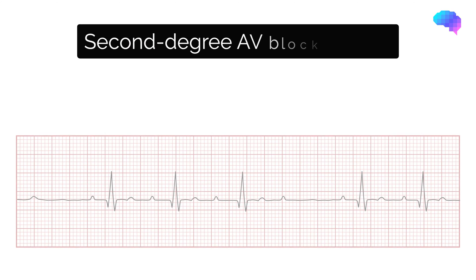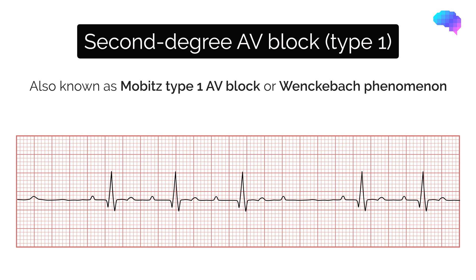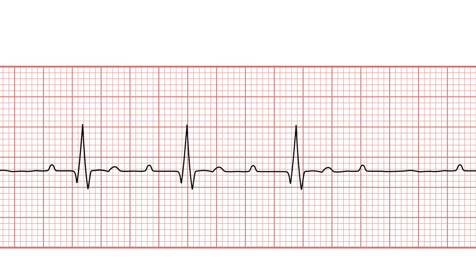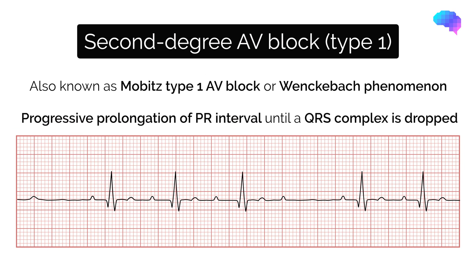Second degree AV block type 1 is also known as Mobitz type 1 AV block, or Wenckebach phenomenon. Typical ECG findings include progressive prolongation of the PR interval until eventually the atrial impulse is not conducted and the QRS complex is dropped. AV nodal conduction then resumes within the next beat, and the sequence of progressive PR interval prolongation and eventual dropping of a QRS complex repeats itself.